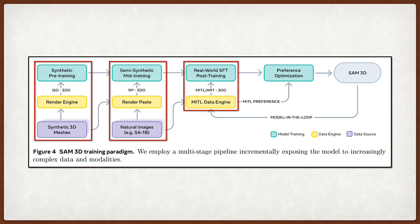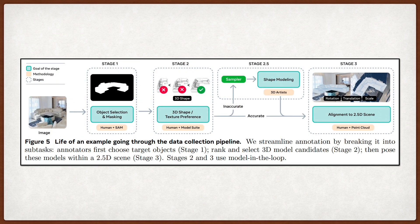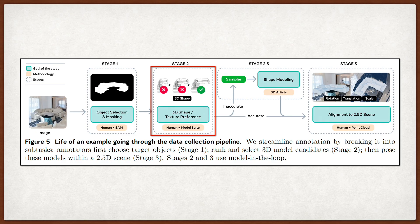After the model has learned some priors from synthetic data, they move to post-training, which involves a model in the loop or MITL pipeline. The insight here is that while humans are terrible at creating 3D meshes from scratch, they are actually quite good at looking at a few 3D options and telling you which one looks best. So they generate multiple candidate meshes, using their model or retrieval methods, and show them to human annotators who simply rank them or select the best one. This turns a generation task into a verification task, which is much faster and scalable, and allows them to collect millions of preference signals, which they then use to fine-tune the model, using supervised fine-tuning and direct preference optimization, or DPO.